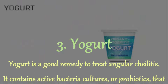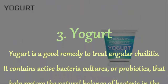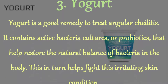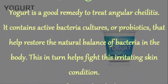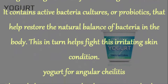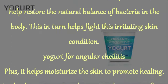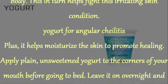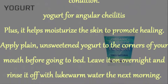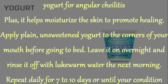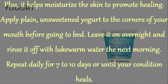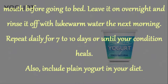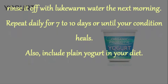3. Yogurt. Yogurt is a good remedy to treat angular cheilitis. It contains active bacteria cultures, or probiotics, that help restore the natural balance of bacteria in the body, which in turn helps fight this irritating skin condition. It also helps moisturize the skin to promote healing. Apply plain, unsweetened yogurt to the corners of your mouth before going to bed. Leave it on overnight and rinse off with lukewarm water the next morning. Repeat daily for 7 to 10 days. Also, include plain yogurt in your diet.